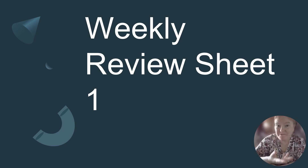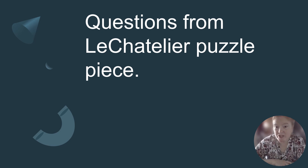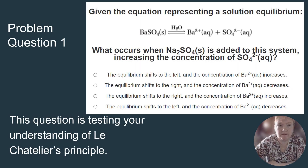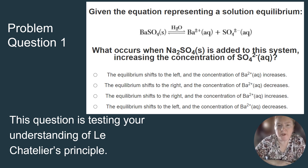It's time for a weekly review sheet. We had some questions that were problematic from the Le Chatelier puzzle piece. Here's the first one: given this equation, what occurs when Na2SO4 is added to the system, increasing the concentration of SO4²⁻?